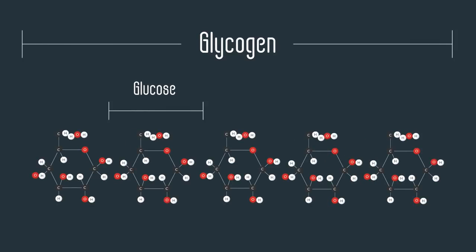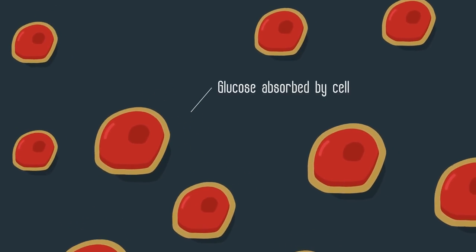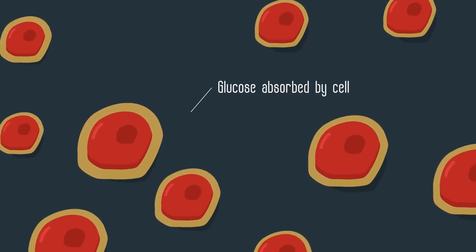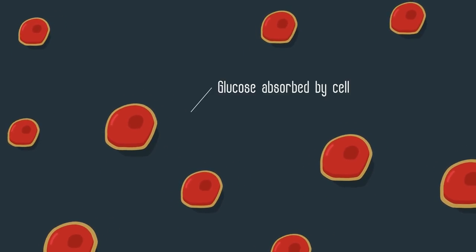Insulin also causes your body cells to uptake or take in glucose, so this decreases your blood glucose level back to its optimal state. When this system is faulty, this leads to a medical condition known as diabetes.